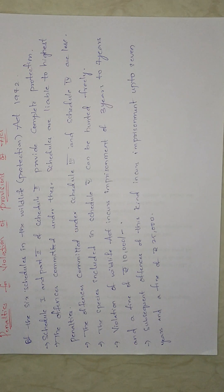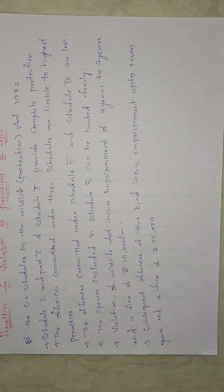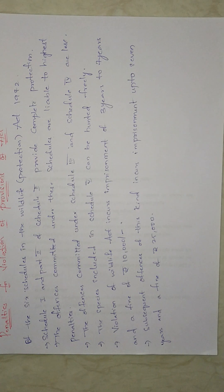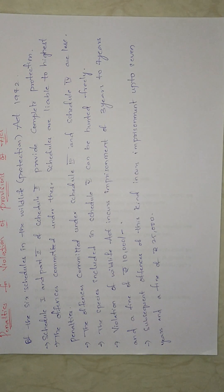Offenses committed under Schedule Three and Schedule Four carry lesser penalties — animals under these schedules can be hunted but only within certain limits. Species included in Schedule Five can be hunted freely. Violation of the Wildlife Protection Act incurs imprisonment of three to seven years and a fine of ten thousand rupees. For subsequent offenses, imprisonment can extend up to seven years and the fine increases to twenty-five thousand rupees.